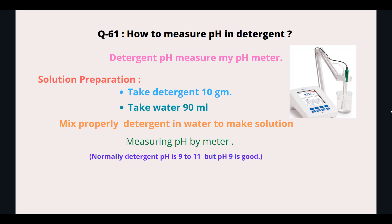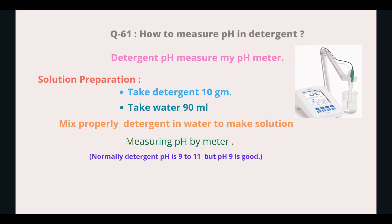How to measure pH in detergent? Detergent pH is measured by a pH meter. Solution preparation: take 10 grams of detergent and 90 ml of water. Mix the detergent properly in water to make a solution, then measure pH by meter. Normally, detergent pH is 9 to 11, but pH 9 is considered good.